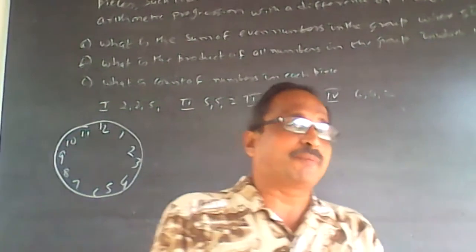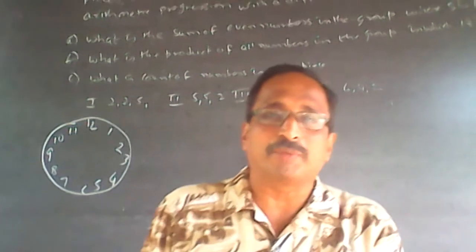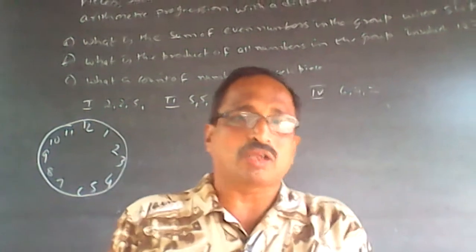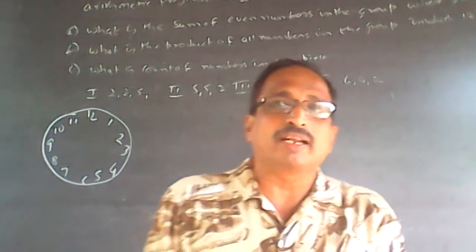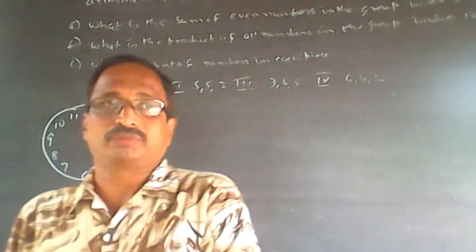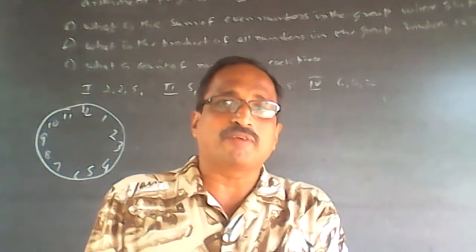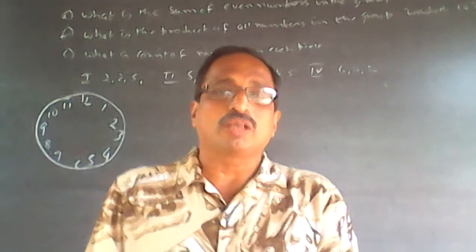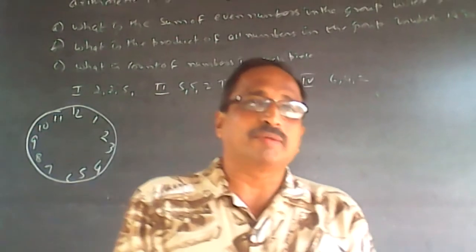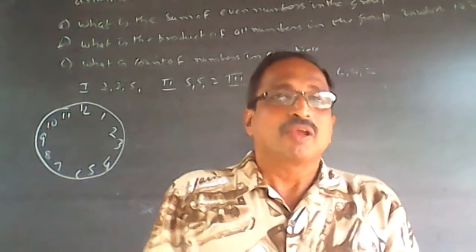Whenever it is an arithmetic progression, if the number of terms is odd, the center number is always the average. Whenever it is an arithmetic progression, if the number of numbers are odd, the center number is always the average number.